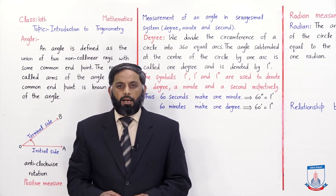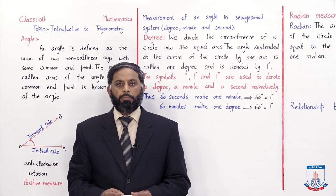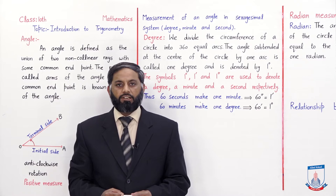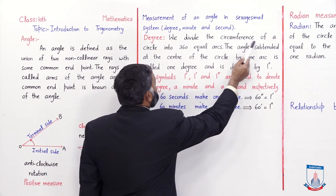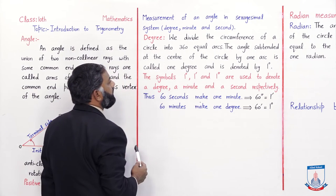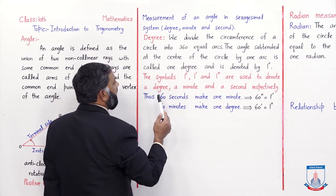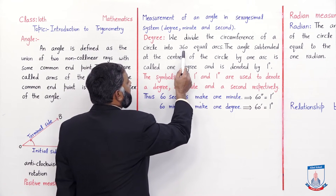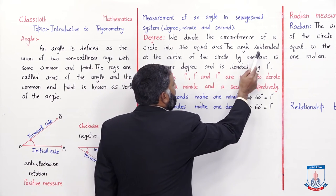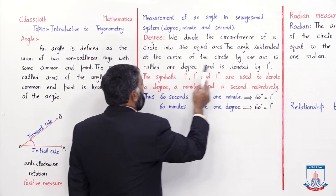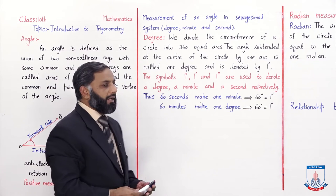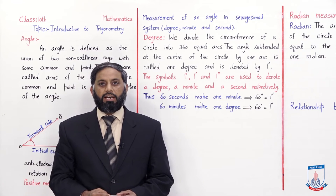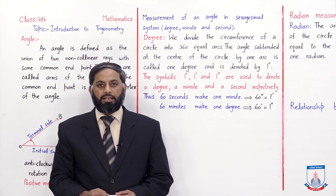Students, so far you have measured angles in degree or decimal form. Now we will study the measurement of angles in the sexagesimal system, also called the degree-minute-seconds form. We divide the circumference of a circle into 360 equal arcs. Since a complete angle of a circle is 360 degrees, we can divide the circumference into 360 equal arcs. The angle subtended at the center of the circle by one arc is called one degree, denoted by the degree symbol.